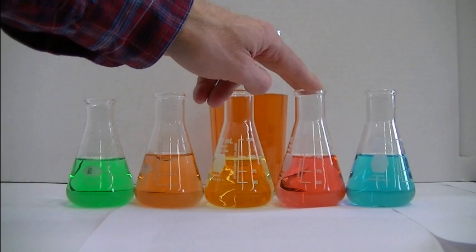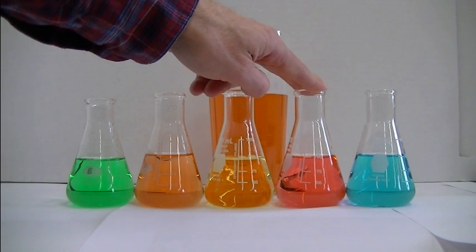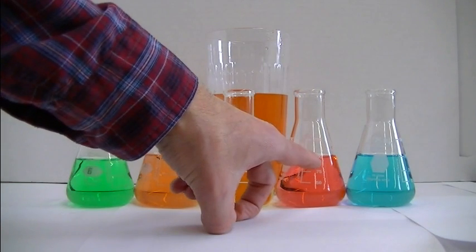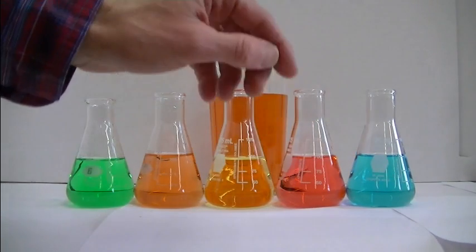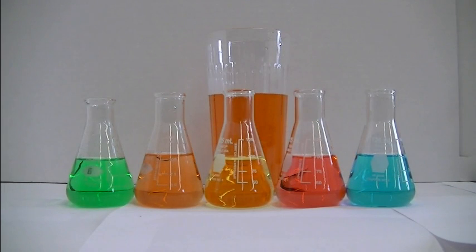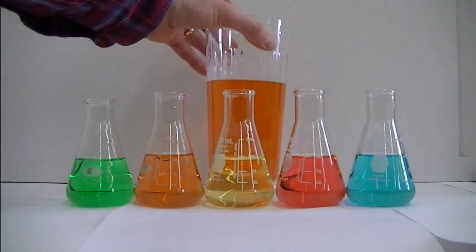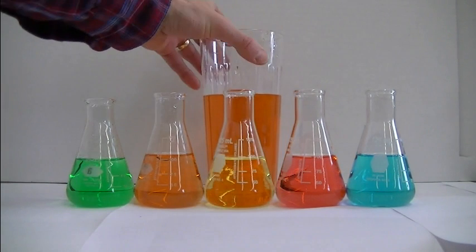For the red, two drops of red, 500 milliliters of water, and 100 milliliters of that goes into the flask. And of course for the blue, two drops of blue, 500 milliliters of water, and of the 500 that you prepare, 100 goes into the flask.